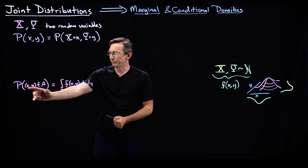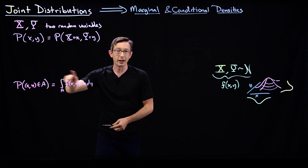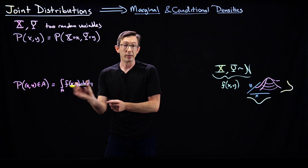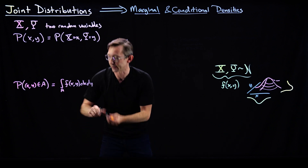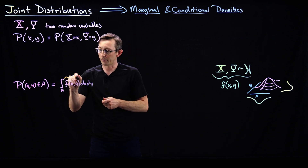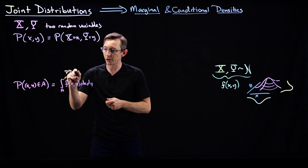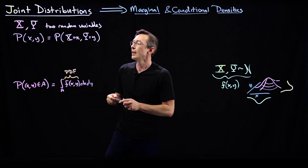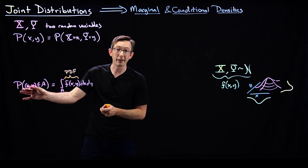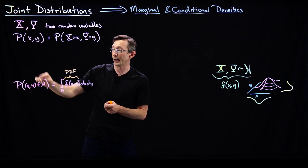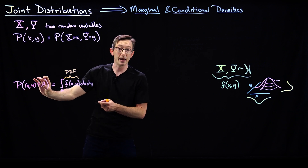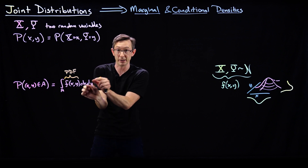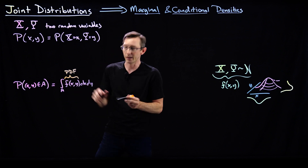For continuous random variables X and Y, we know that our probability density function is given by this function F of X, Y. We can compute the probability of our random variable X and Y living in some 2D area by just integrating this function over all of those little infinitesimal dx dy's in that area. That's the PDF.